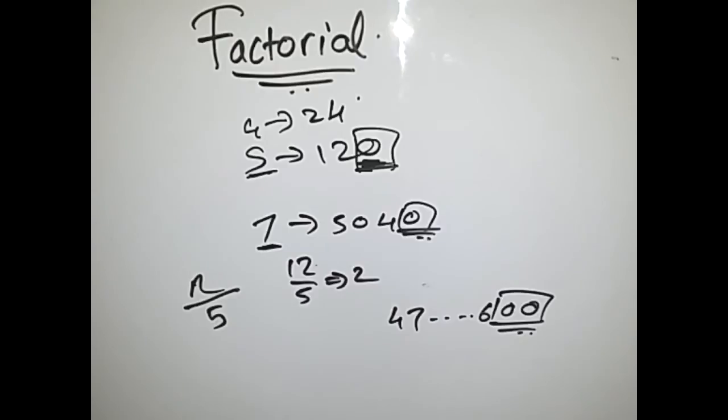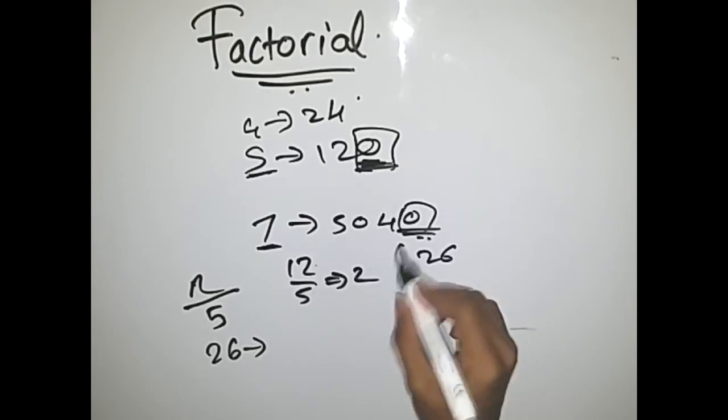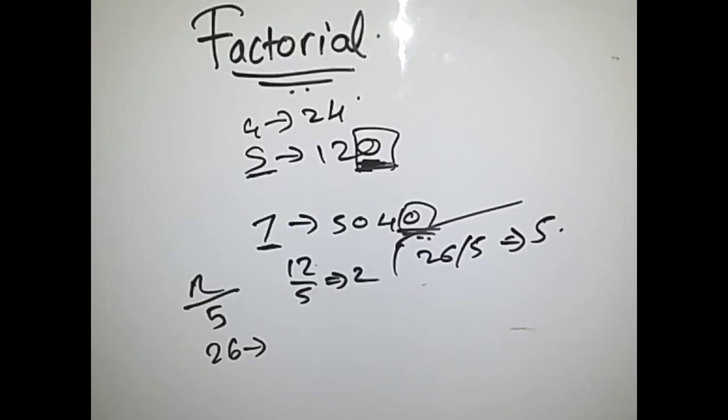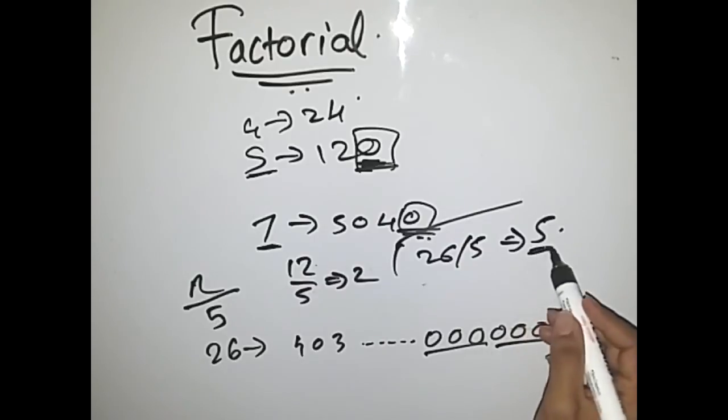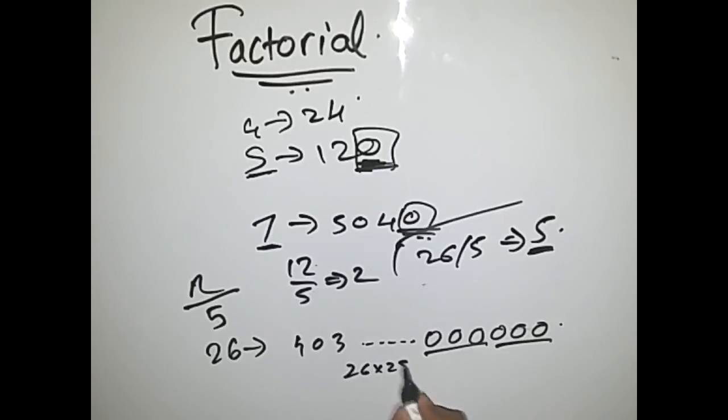Let me show you the factorial of 26. If you divide 26 by 5 you get 5, but the factorial of 26 has 6 zeros at the end. How does this 6 come from when the answer should have been 5? It's because in 26 factorial we have 25, which comprises 5 × 5. That's why 1 extra 5 gets added and we get 6 zeros.